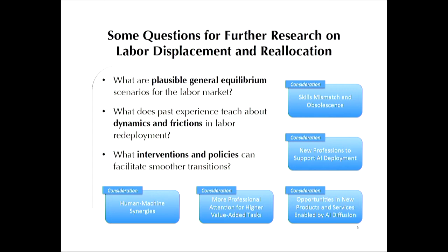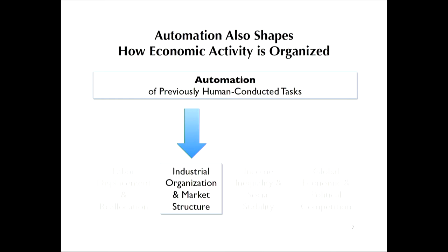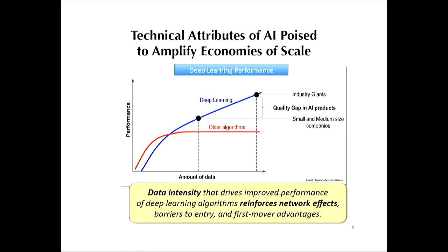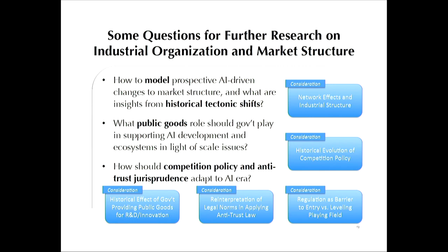Second, the last few decades have witnessed growing concentration within many important industries in the U.S. and around the world. Artificial intelligence has the potential to amplify these trends. Unlike many other algorithms, performance improvements in deep learning continue to scale with ever-greater quantities of data. Combined with the network effects of platform ecosystems, this further increases the competitive benefits of size. Researchers can formalize these propositions into models and testable hypotheses and map out normative implications for the government's role in providing public goods like R&D and open data, as well as for competition and antitrust policy.